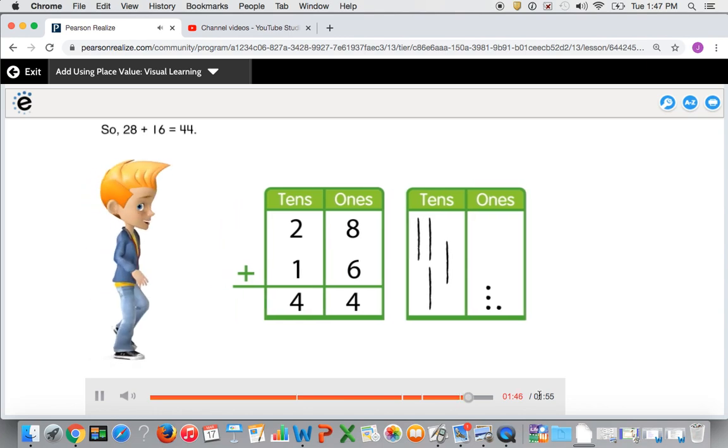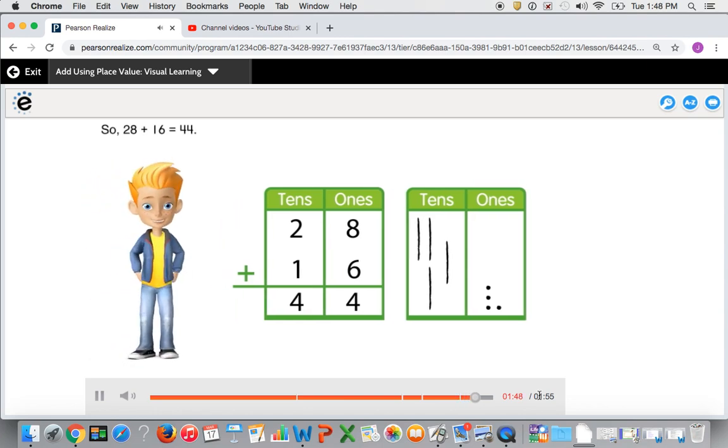So 28 plus 16 equals 44. Now you know how to add using place value.